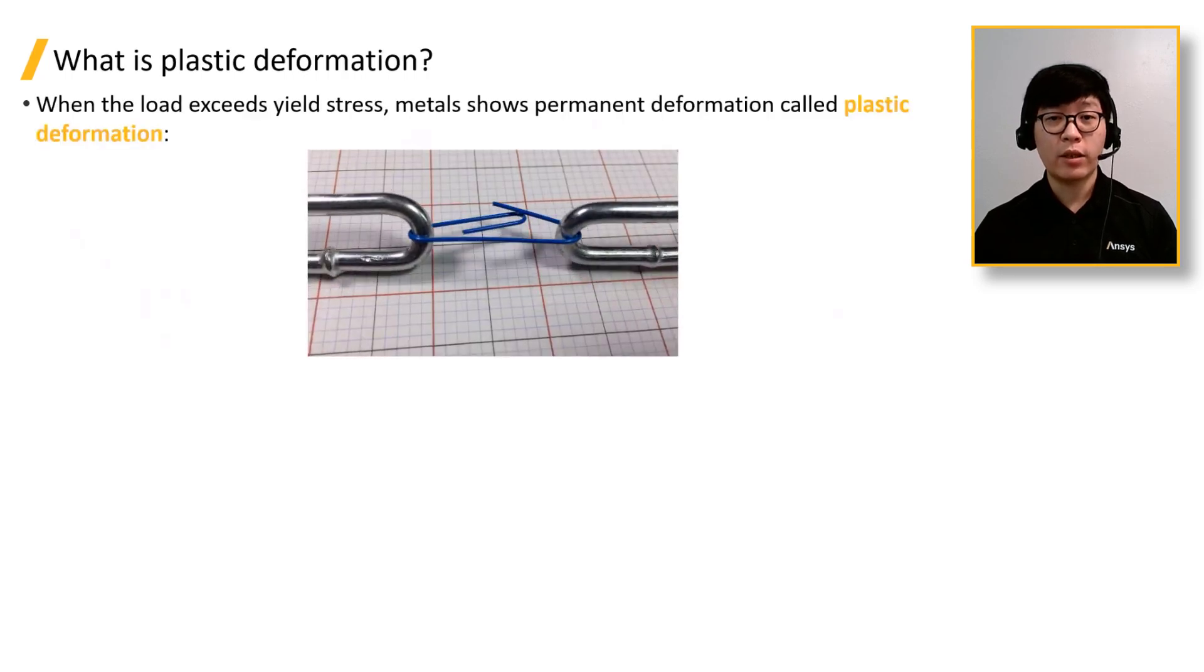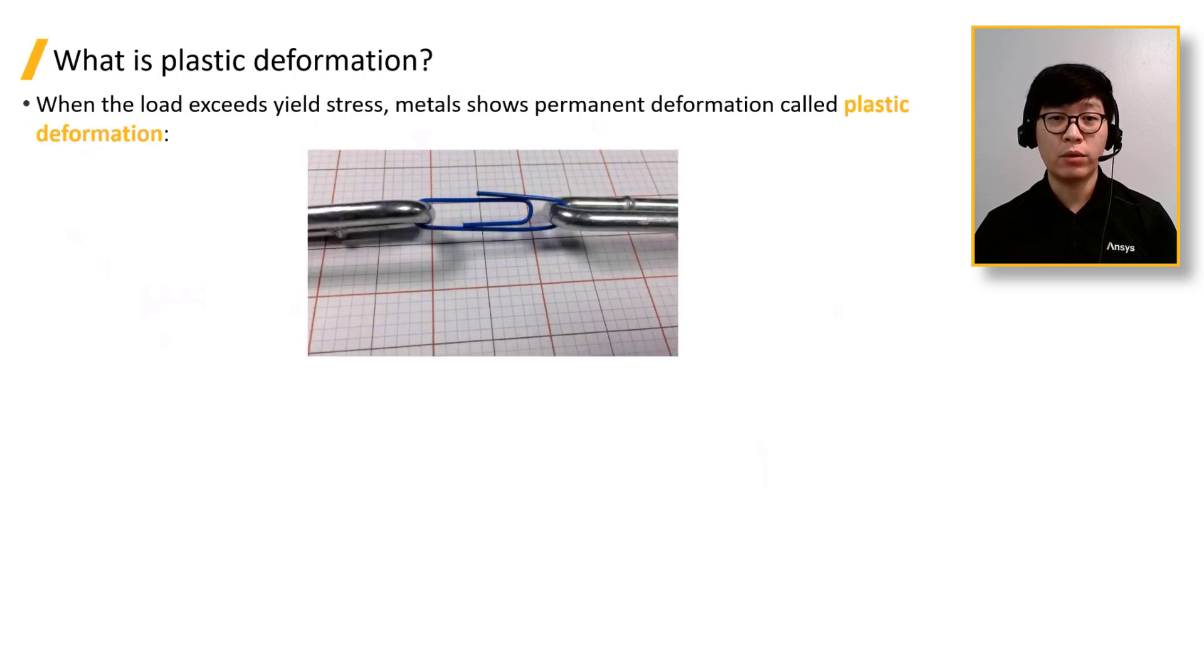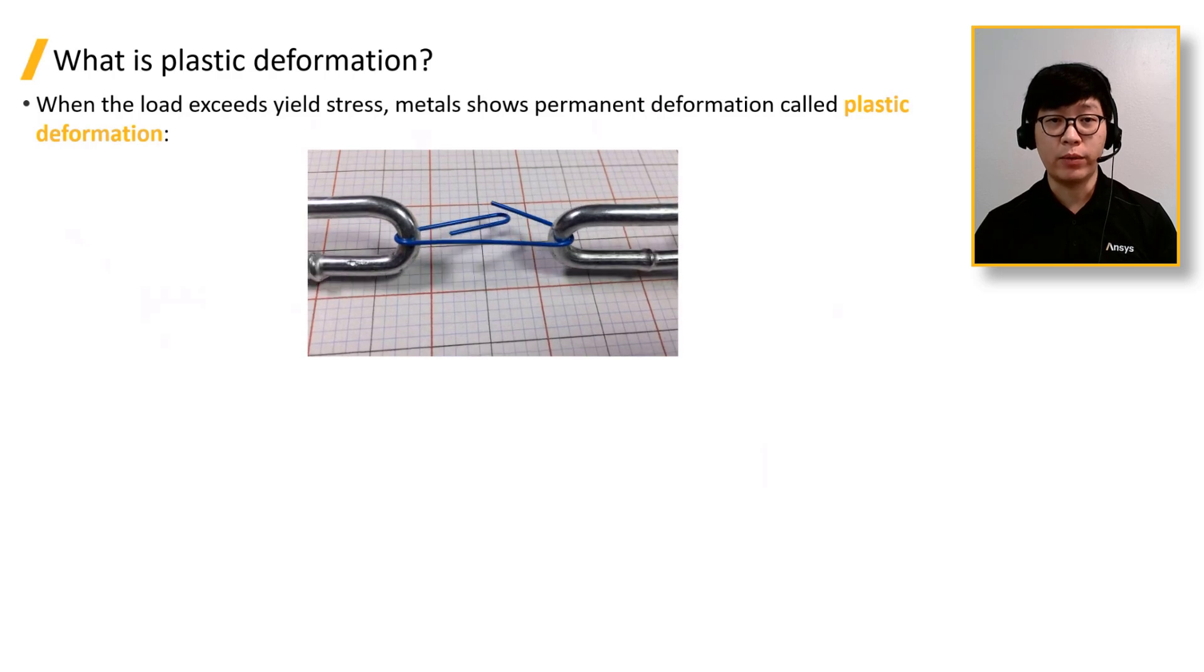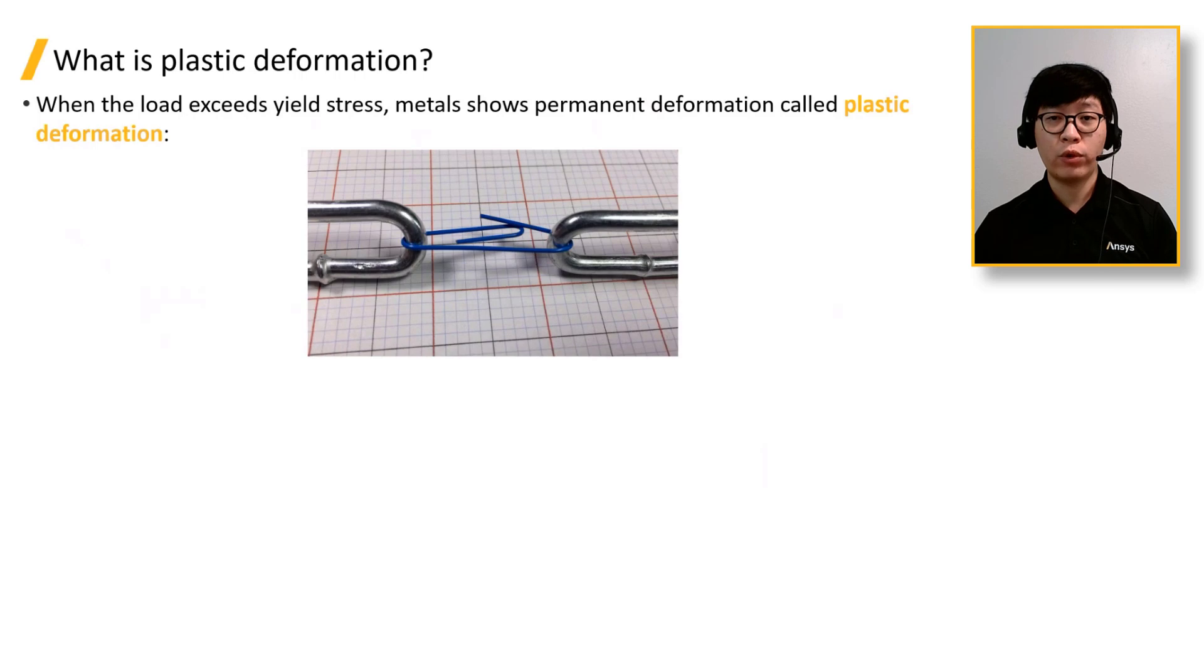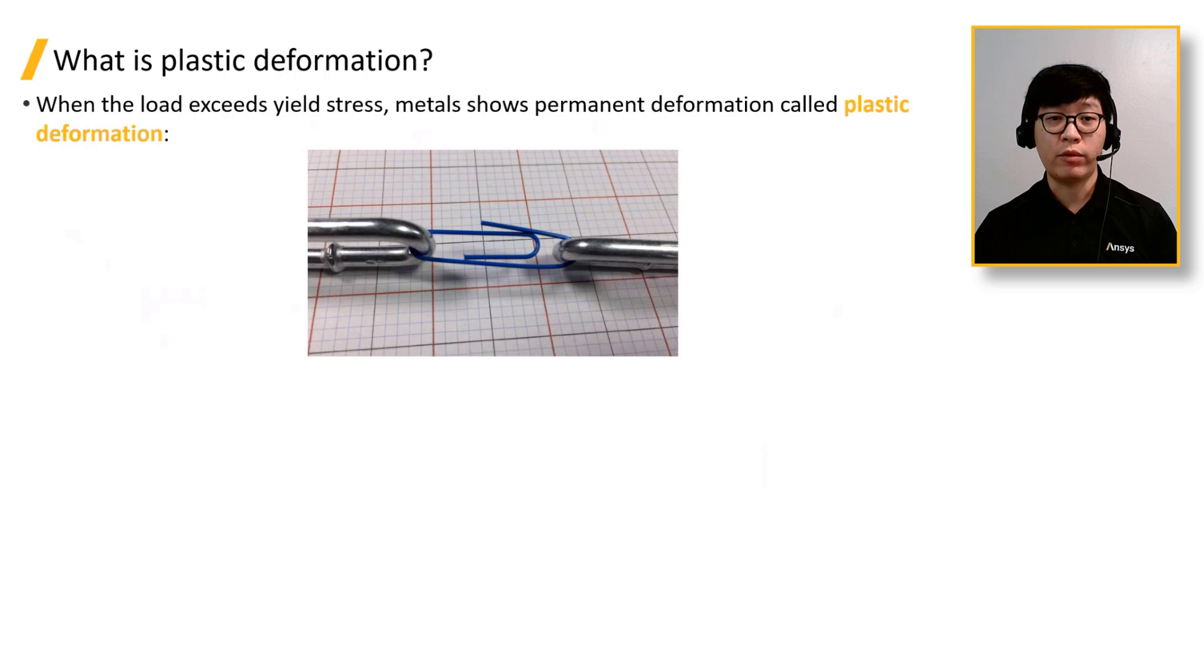Next, we can discuss the concept of plastic deformation. When the load exceeds the yield stress, metals show permanent deformation called plastic deformation. In this video here, we show that the paper clip is deformed and does not return to its original shape when released, showing permanent deformation.